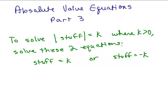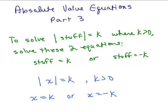By the way, you never see it written as 'stuff' in a regular textbook. They'll usually write it more formally, saying the absolute value equals k can be solved by writing x equals k or x equals negative k. But I like to just use 'stuff' or 'junk' or some expression in the absolute value to get the idea across. These are basically saying the same thing.